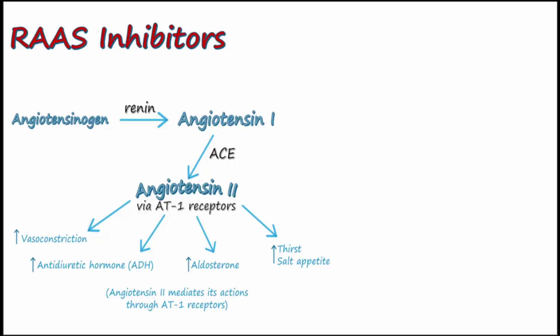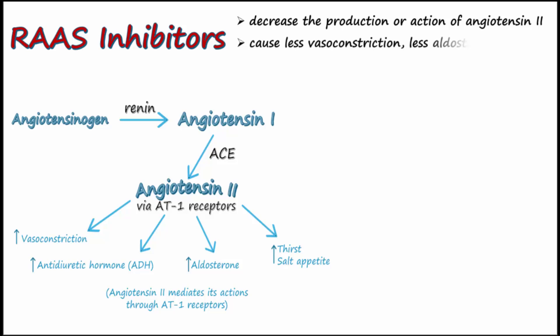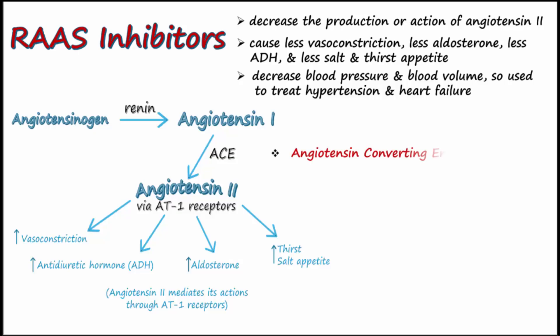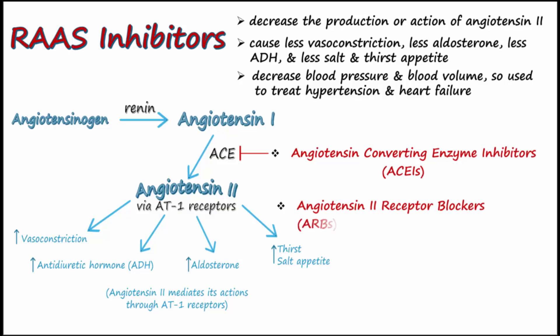The therapeutic effects of RAS inhibitor treatment will decrease the production or actions of angiotensin 2. These actions will cause less vasoconstriction, less aldosterone, less ADH, and less salt and thirst appetite. Due to these actions to lower blood pressure and blood volume, RAS inhibitors are very important drugs used in the treatment of hypertension and heart failure. RAS inhibitor classes include ACE inhibitors, ARBs, and renin inhibitors.